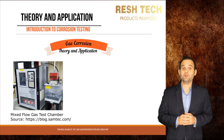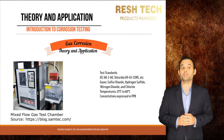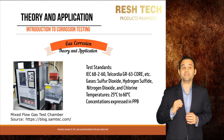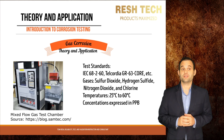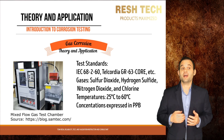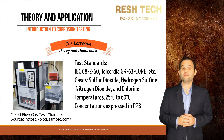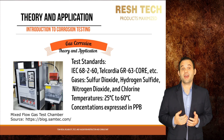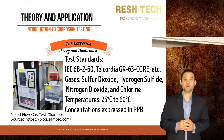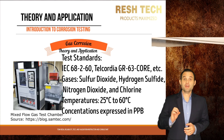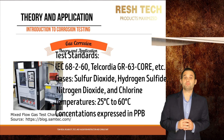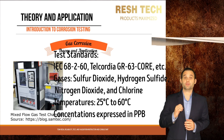Pictured is an example of a mixed flow corrosion chamber. Test standards for gas corrosion testing include IEC and Telcordia test standards as listed. Gases used include sulfur dioxide, hydrogen sulfide, nitrogen dioxide, and chlorine. Gas concentrations are expressed in parts per billion (PPB). Make sure you know what concentrations and gases you will need to use for your test and application based on your requirements.